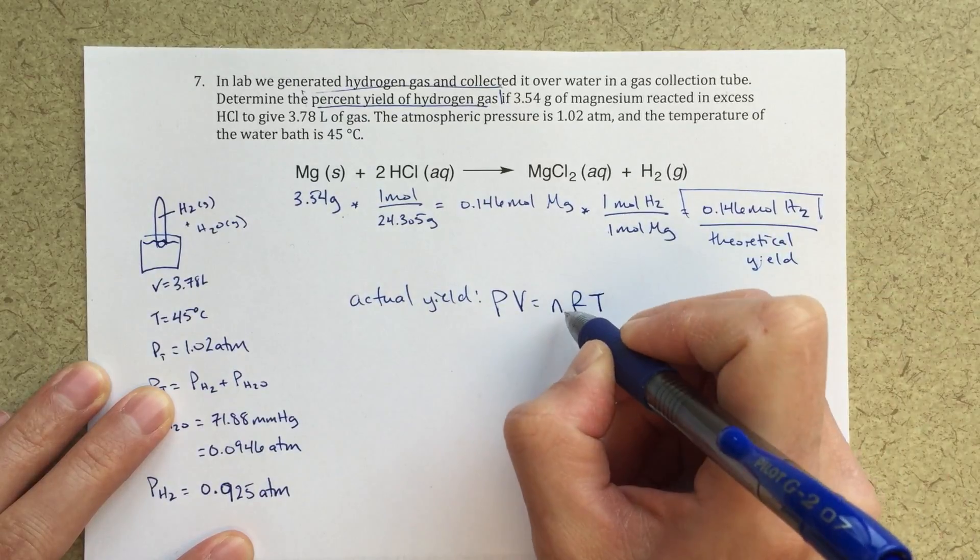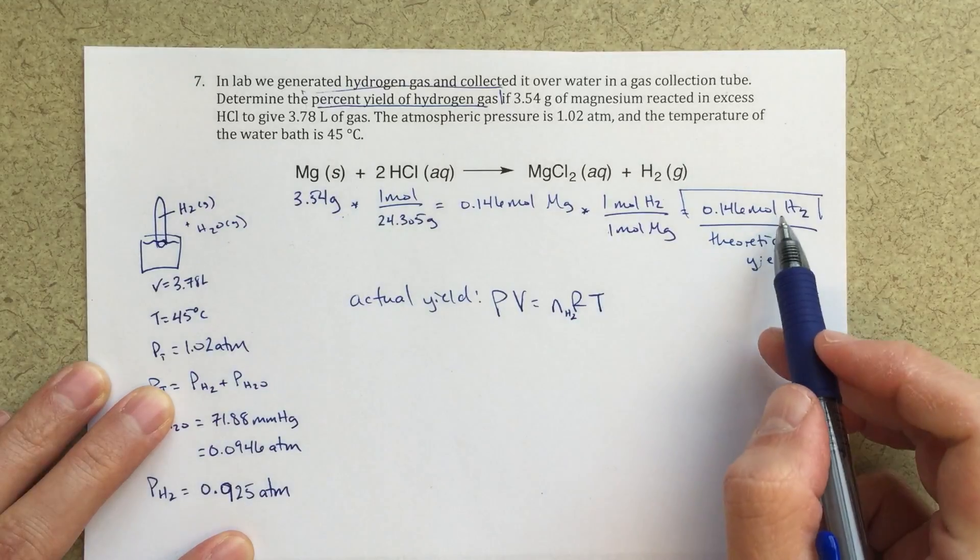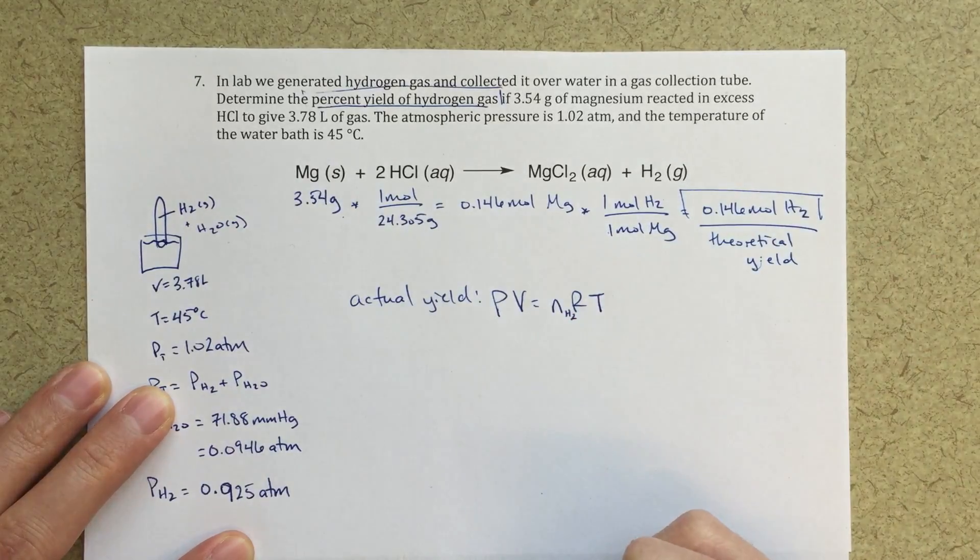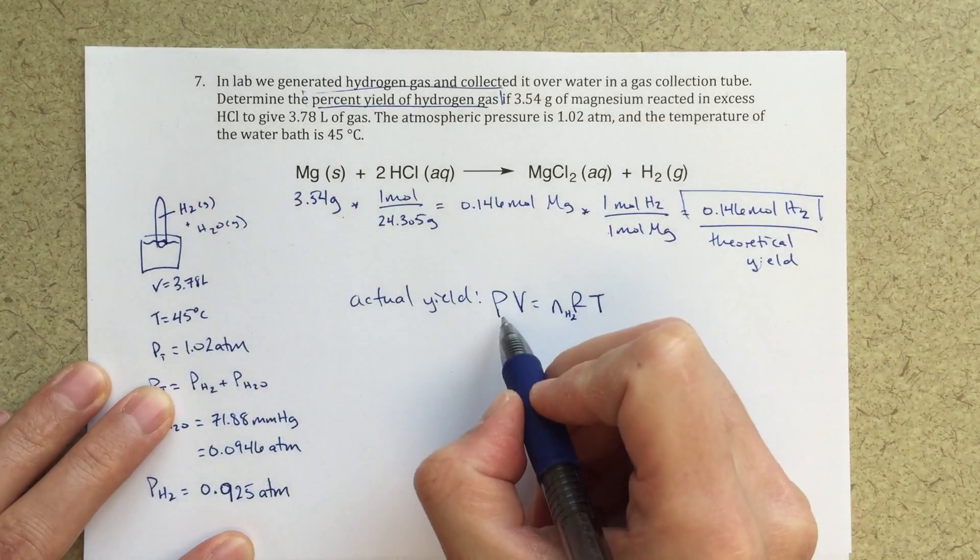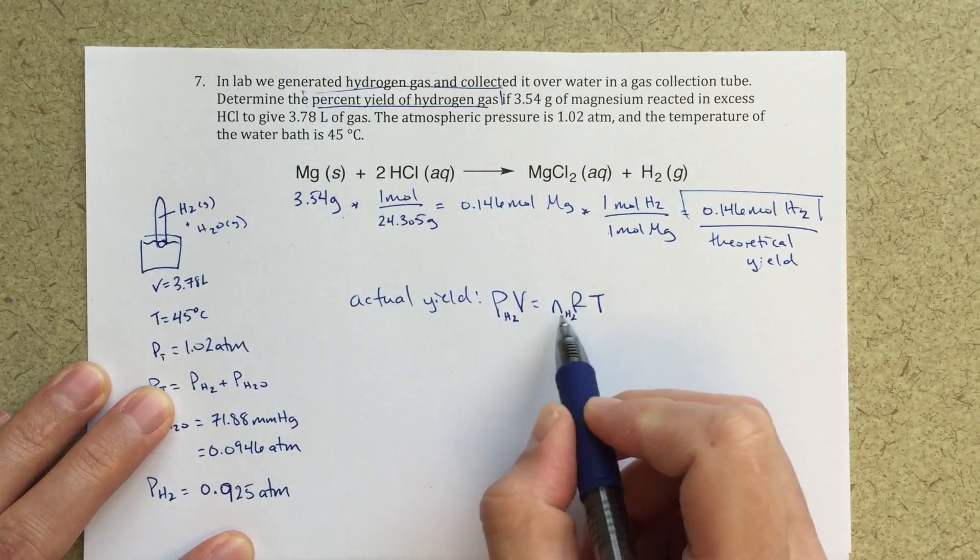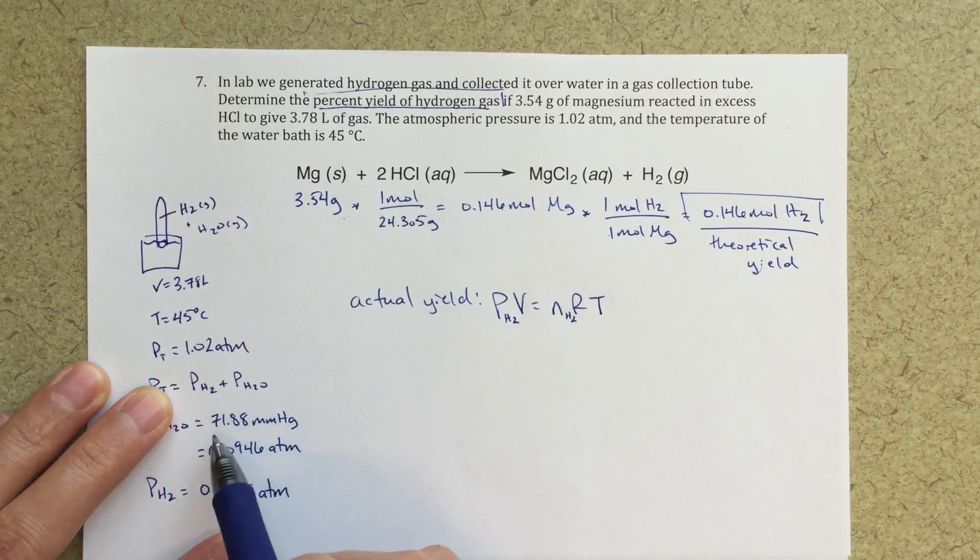Now for n, I'm looking just for the moles of hydrogen gas, right? I wanted to find the moles to figure out my percent yield. So I'm looking for the moles of hydrogen gas in this collection tube. So therefore the pressure that I'm going to need to use is the partial pressure of hydrogen, not the total pressure, right?